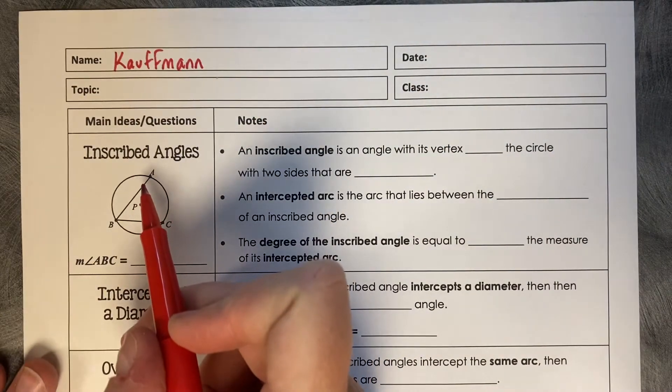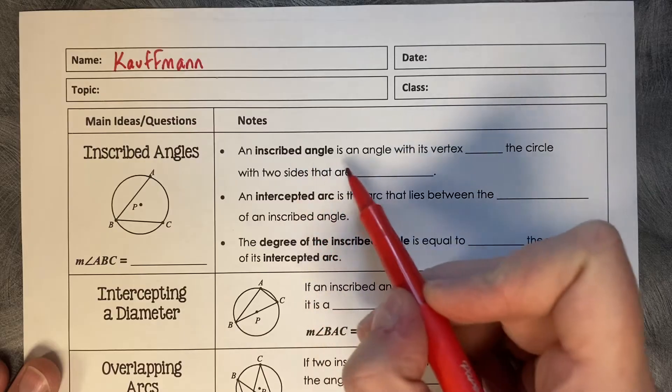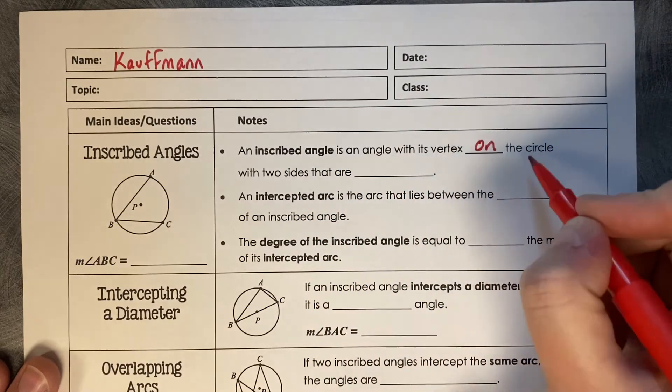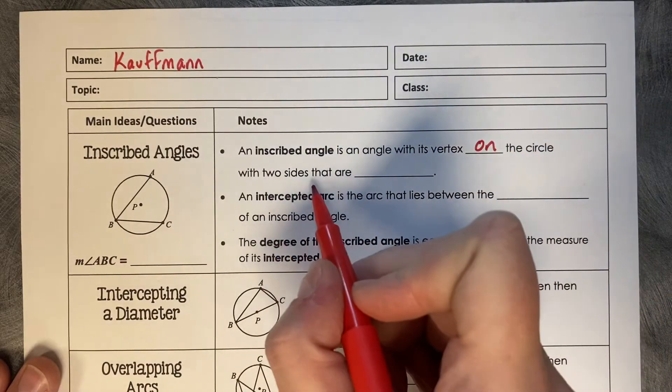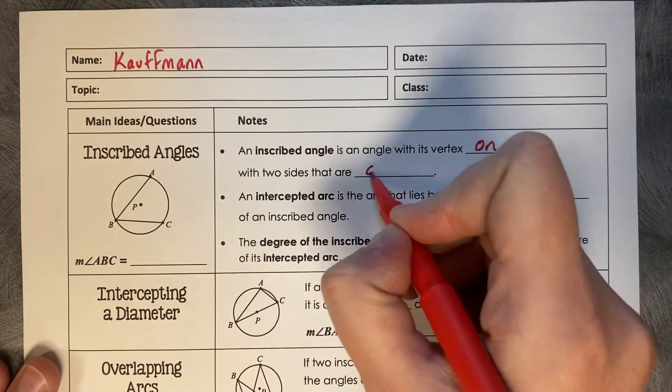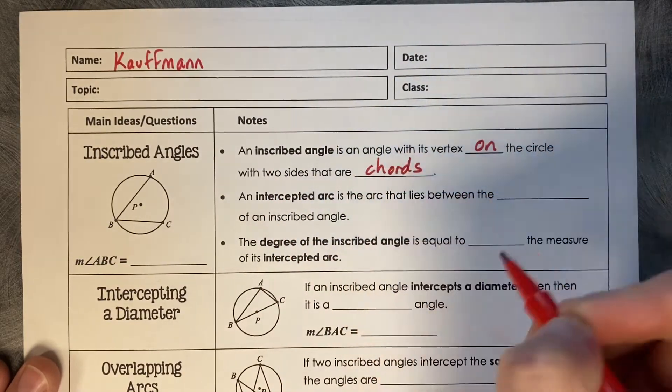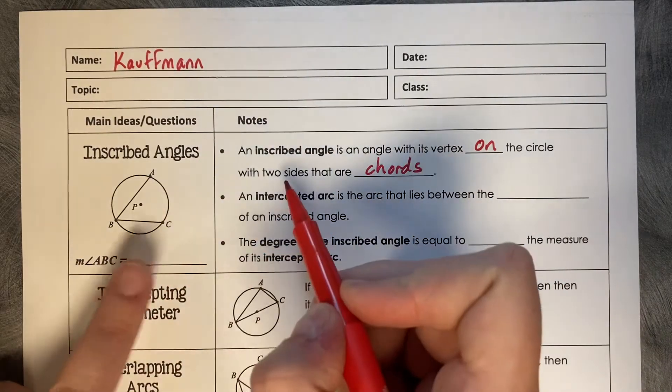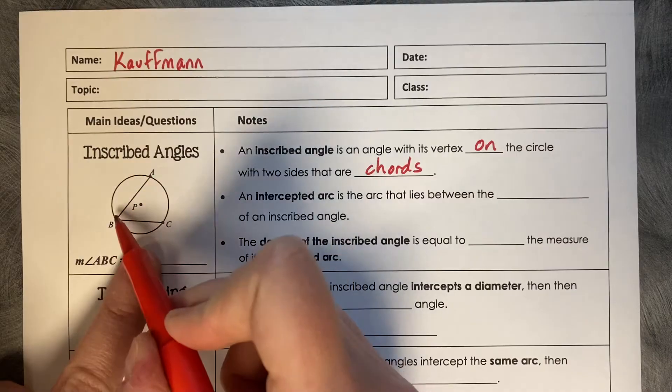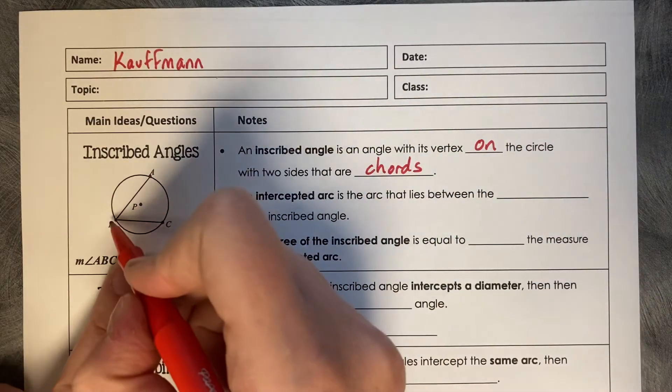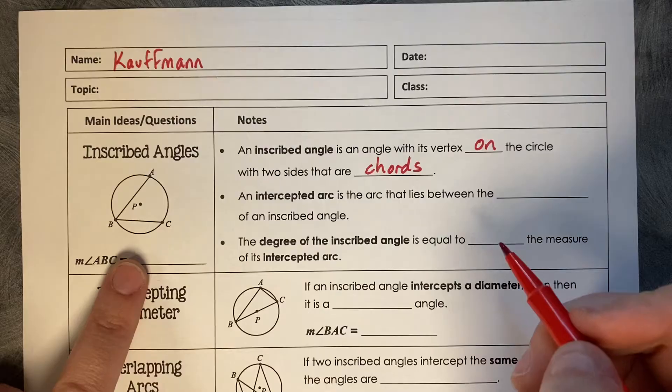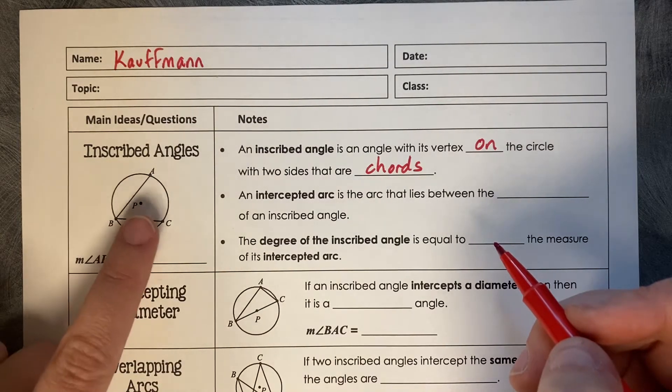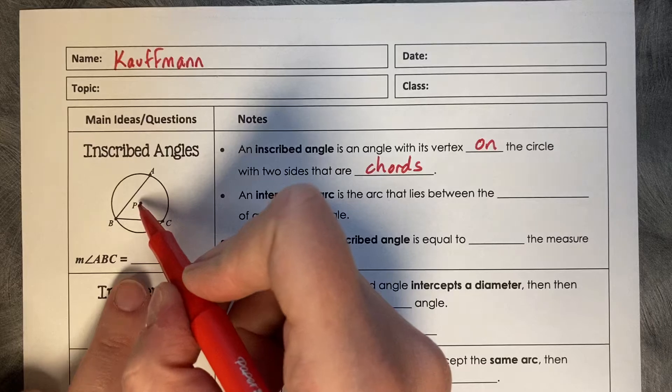Inscribed Angles. An inscribed angle is an angle with its vertex on the circle with two sides that are chords. So an example of an inscribed angle is ABC because its vertex B lies on the edge of the circle, as opposed to a central angle where it would come from P.